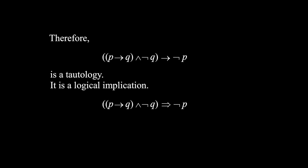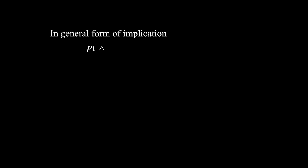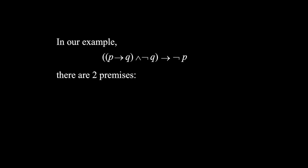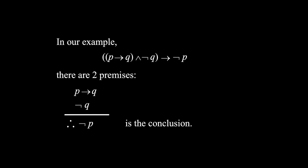Some logical implications are considered very important and are applied to the so-called rules of inference. In general, if we have the form p1 and p2 and ... and pn implies q, then each of p1, p2, ... pn is called a premise and q is called the conclusion. Here, we have two premises: p implies q, and not q; and the conclusion is not p. This is called the rule of modus tollens. This rule says that whenever p implies q is true and not q is true, then the conclusion not p is also true. We use three dots indicating 'therefore' or 'thus.'